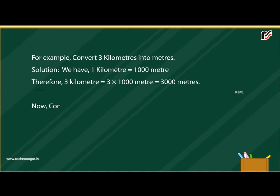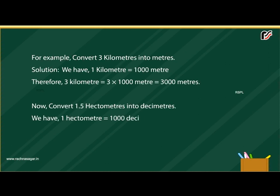Now, convert one point five hectometres into decimetres. We have one hectometre is equal to one thousand decimetres. Therefore, fifteen hectometres is equal to fifteen multiplied by one thousand decimetres, which equals fifteen thousand decimetres.